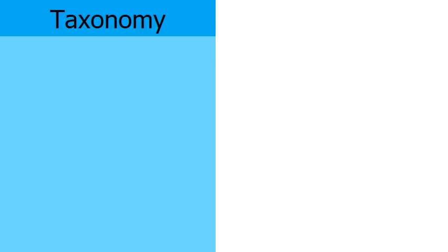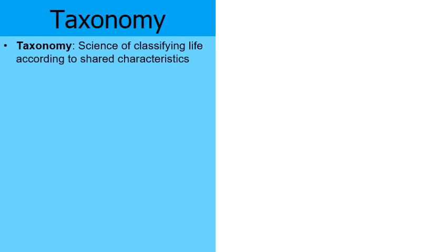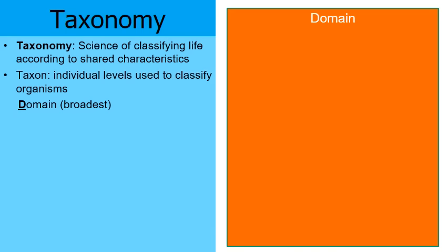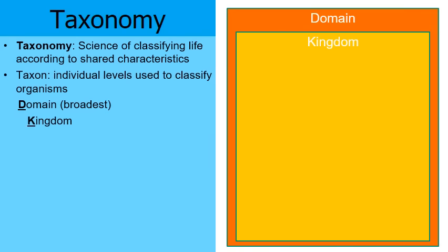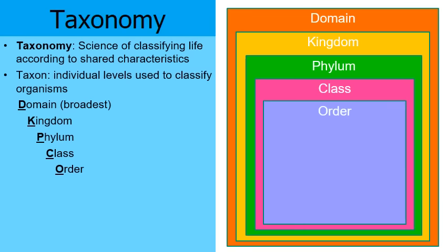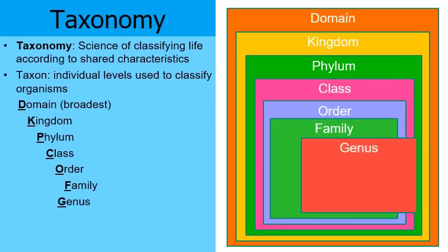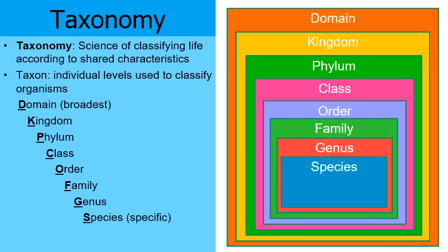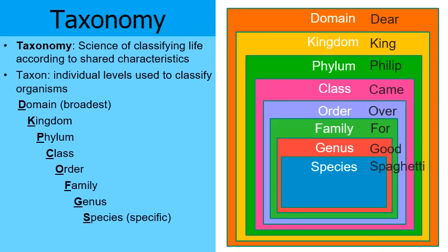Taxonomy is the science of classifying life according to shared characteristics. The levels of classification — each called a taxon — start very broad and become more specific. They are: domain, kingdom, phylum, class, order, family, genus, and species. A mnemonic to remember the order: Dear King Philip Came Over For Good Spaghetti.